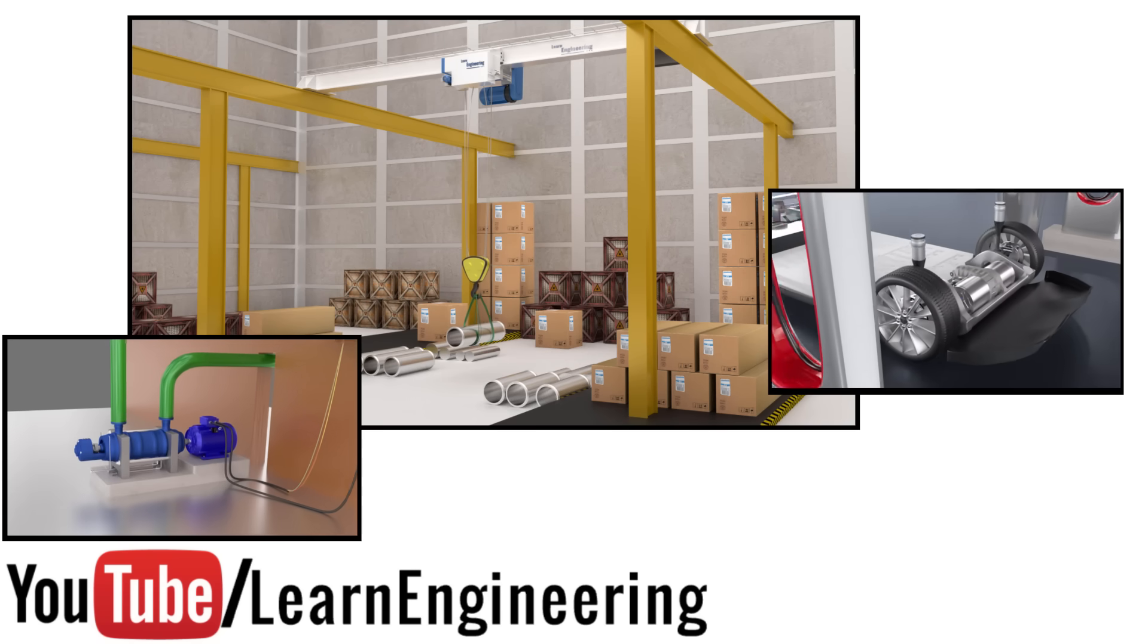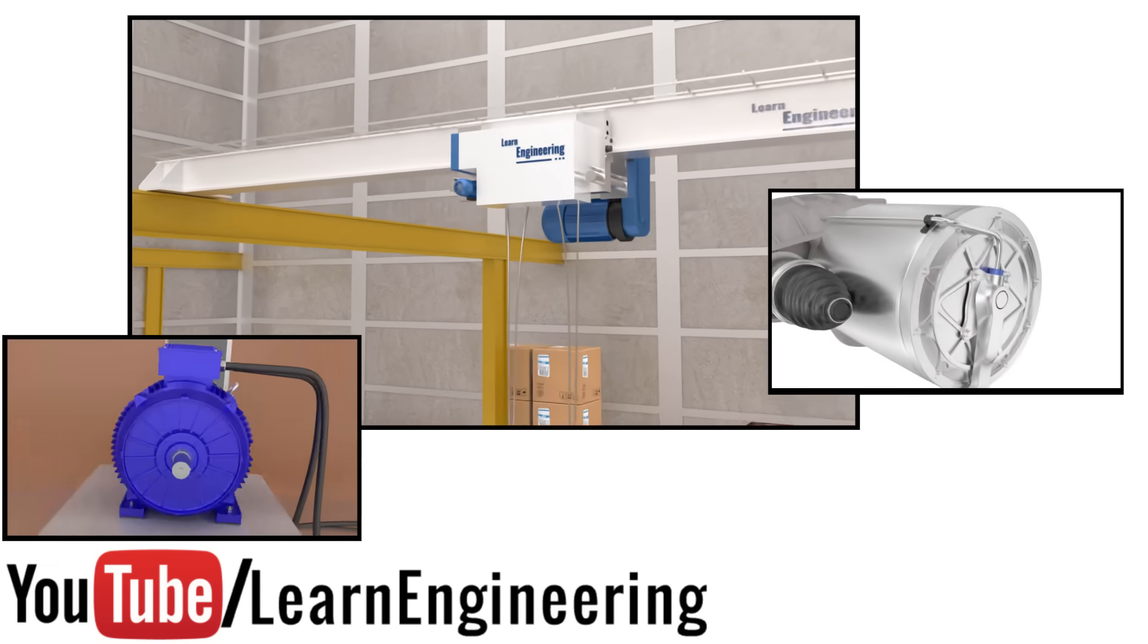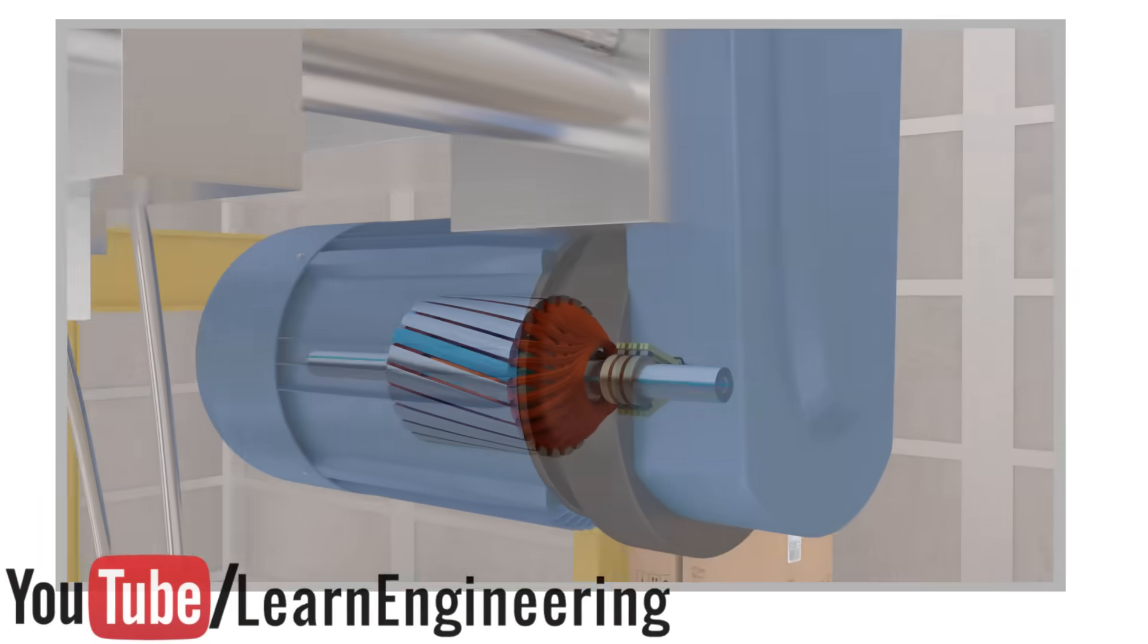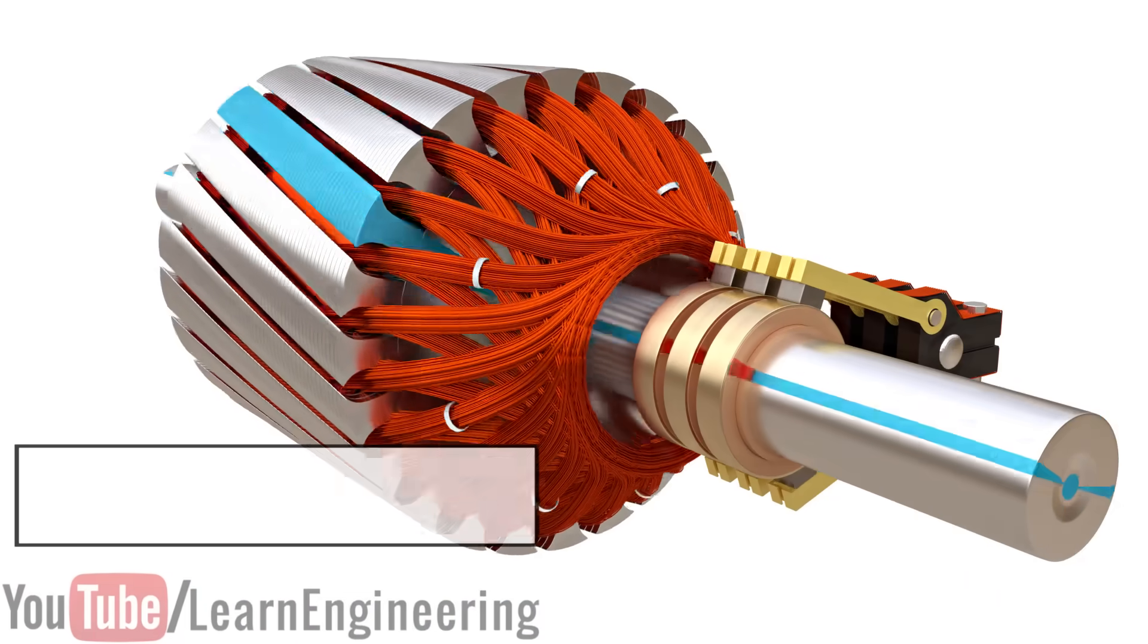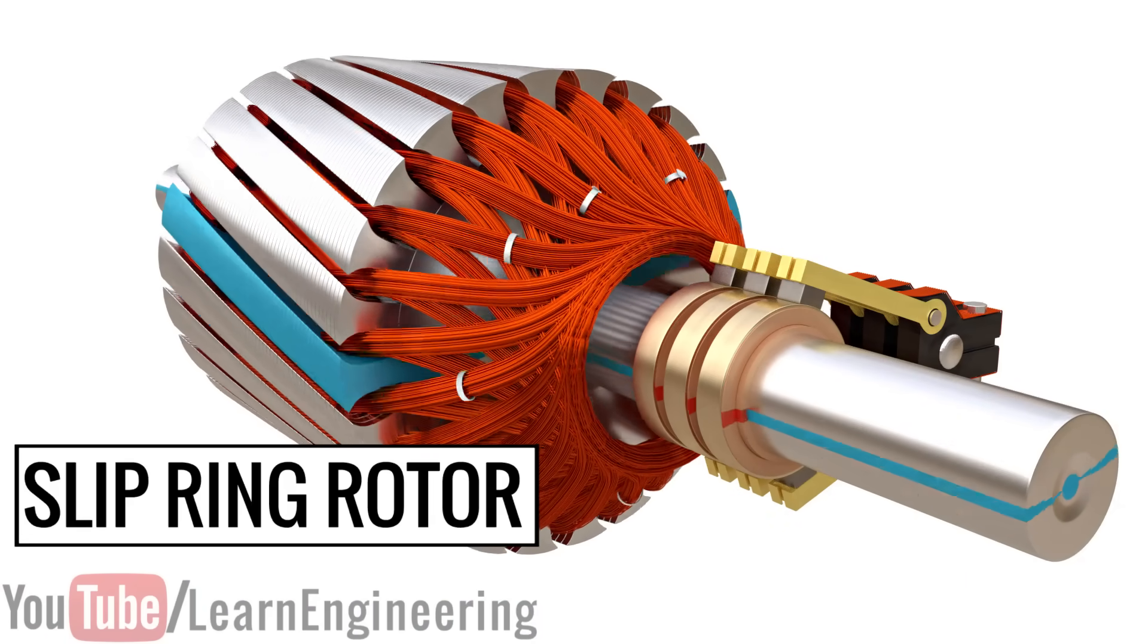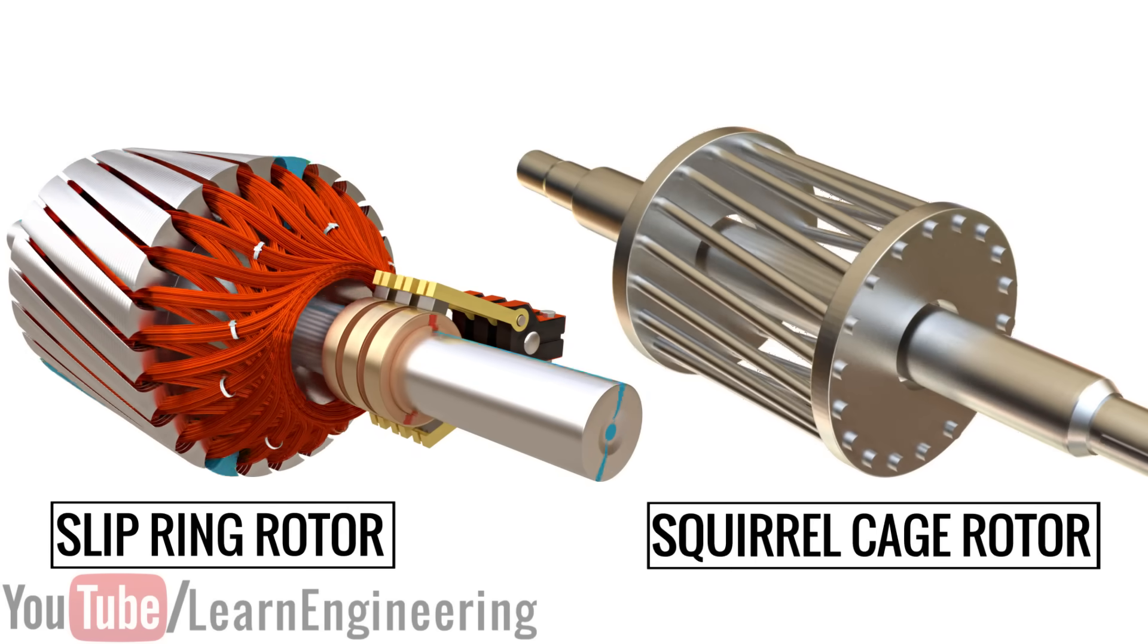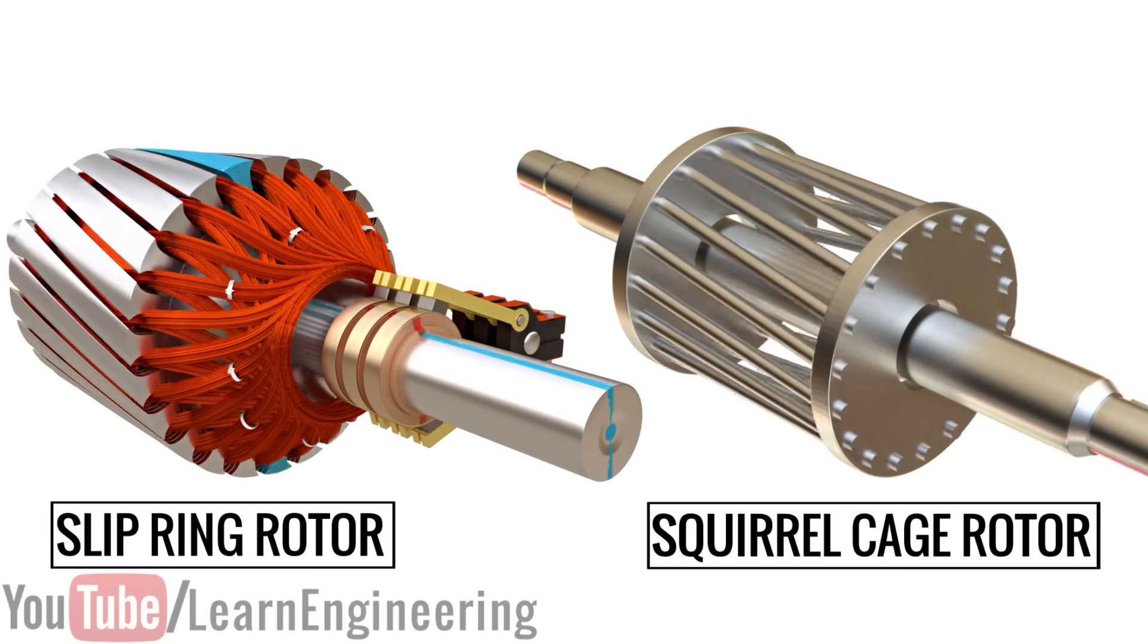Induction motors have been ruling the industrial world for many decades. In the induction motors used in lifts and hoists, you will see a type of rotor called a slip ring rotor, whereas in most other applications, you will see a simpler squirrel cage type of rotor. Why are there two different designs of rotor construction for induction motors?